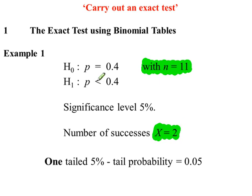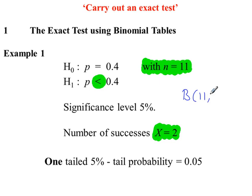H1 says less than, so we work out the probability that x is less than or equal to 2 from the binomial tables. We go to the binomial distribution with 11 trials and where p is 0.4, and we work out P(x ≤ 2) because H1 says less than.